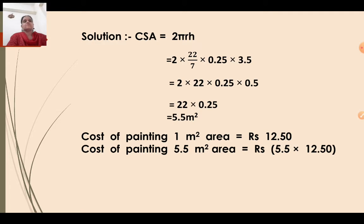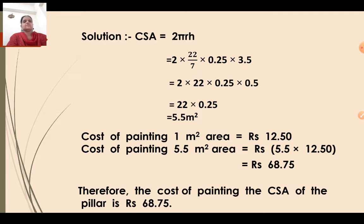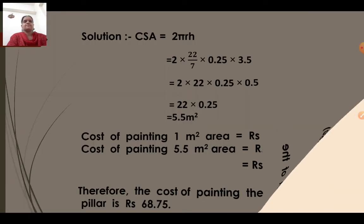The cost of painting 1 meter square is Rs. 12.50. Therefore cost of 5.5 meter square equals 5.5 into 12.50, and the answer is Rs. 68.75. Therefore the cost of painting the curved surface area of the pillar is Rs. 68.75.